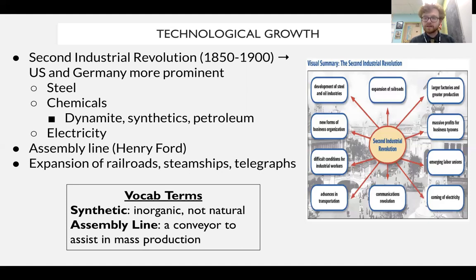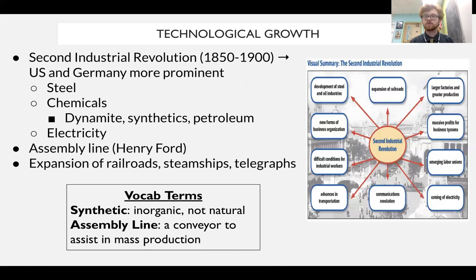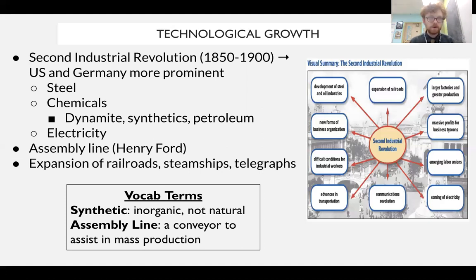We're also going to see an industry formed around chemicals — industrial chemicals. We have the creation of synthetics, which is essentially inorganic material, primarily used in dyes. We are going to see the transition away from organic material to inorganic material as a result of the creation of synthetics. We'll also see a new fuel source with petroleum, which will be instrumental in fueling the second industrial revolution — especially in the creation of automobiles. Petroleum is a new fuel source for the world and a new major industry.